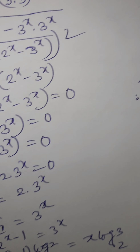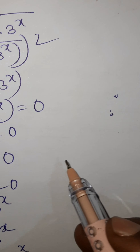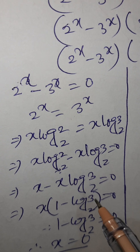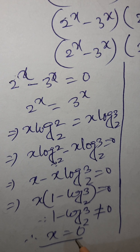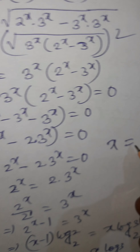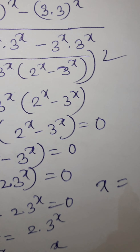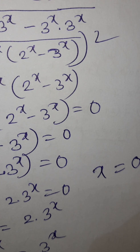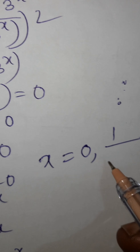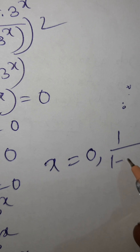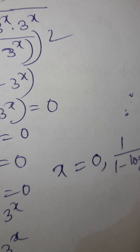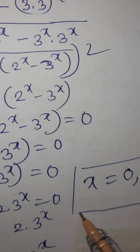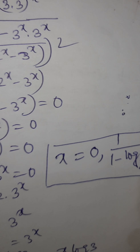So the solution to the given equation is: x equals 0, or x equals 1 divided by (1 minus log base 2 of 3). These are the two values of x.